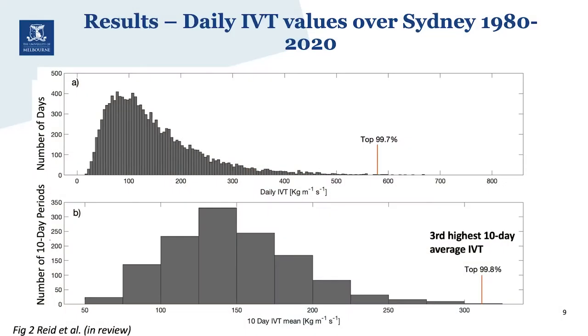We wanted to understand this event in the context of the past, so we looked at daily IVT values for 40 years over Sydney. The y-axis shows the count — the number of days — and the x-axis shows the IVT values. On a typical day you'd expect about 100 kilograms per metre per second, but for this event we observed about 580 at the peak. However, that's only about the 40th highest event over this 40-year period, which made us scratch our heads given the big impacts observed.